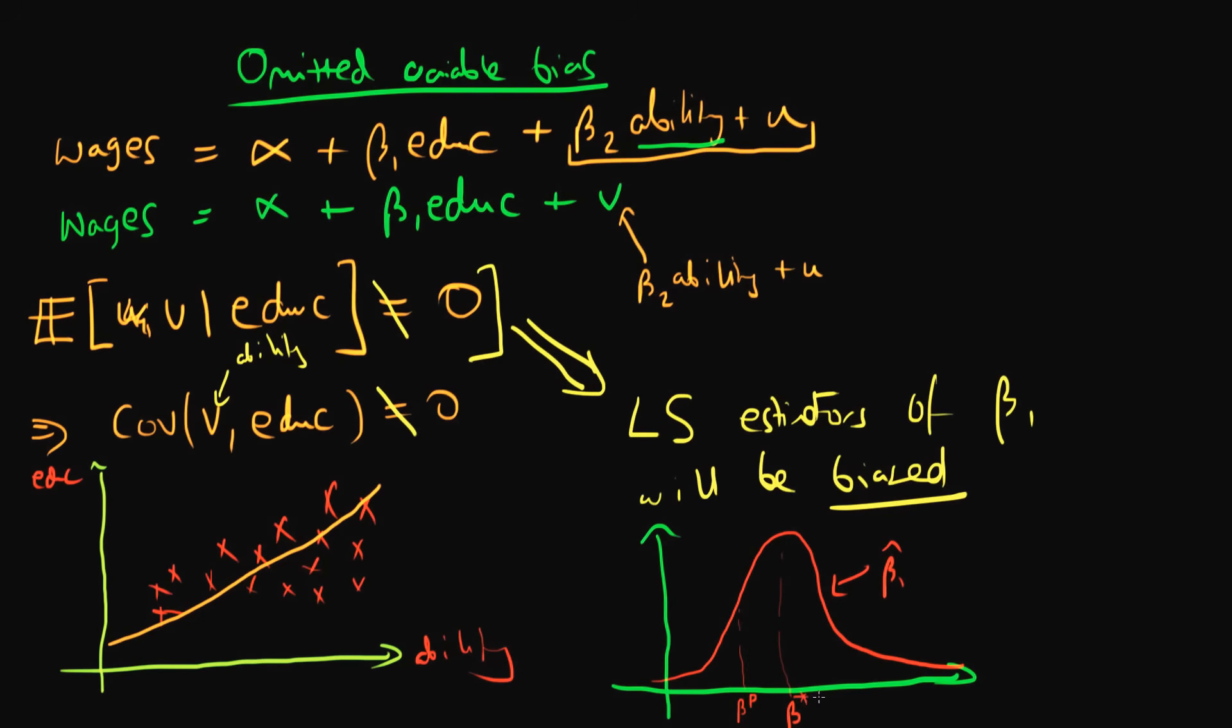It might be something which we call beta star. So it's not going to be exactly equal to beta p. So there is a degree of bias in this estimator.